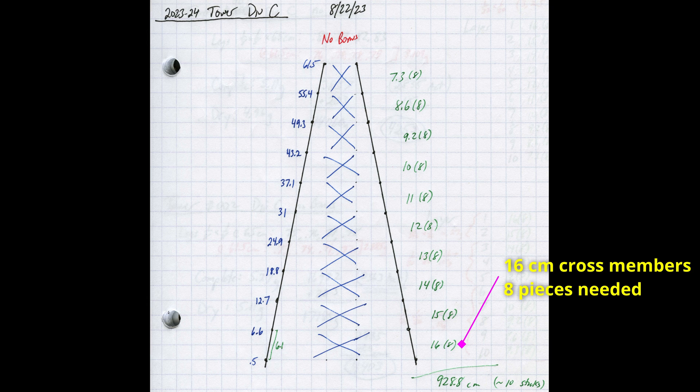The green numbers on the right represent the length of each individual cross-member and how many there are. For example, the bottom layer is 16 cm long, and we'll need 8 of them to complete all 4 sides of the tower. I add up all the lengths and multiply by 8 to get the total length. Here that means this tower design will use 928.8 cm of cross-member material.